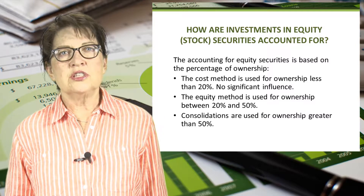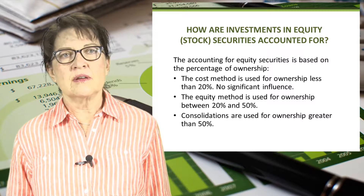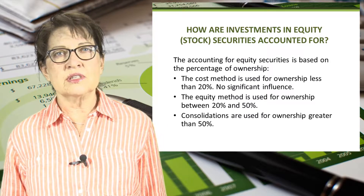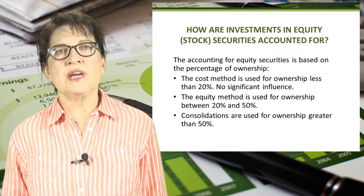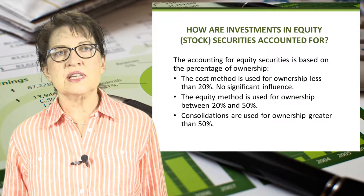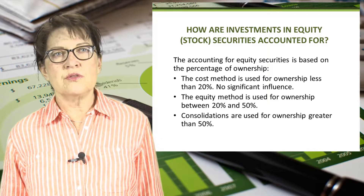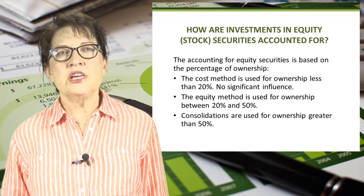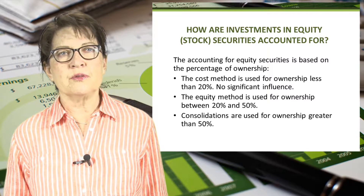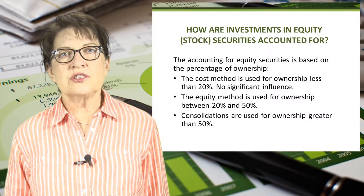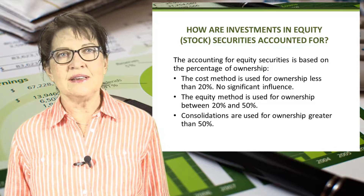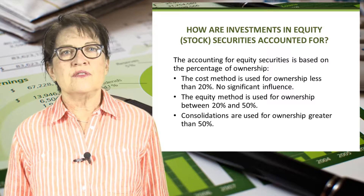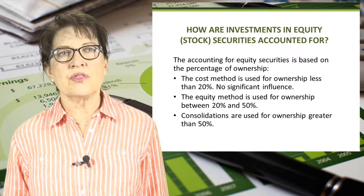The cost method is used for ownership less than 20%. This method presumes that the investor does not have significant influence and lacks the ability to participate in the decisions of the investee company. The equity method is used for ownership between 20% and 50%. Consolidations are used for ownership greater than 50%. If an investor owns more than 50% of an investee, the investor has a controlling interest, and so the investee's financial statements are combined with the investor's.